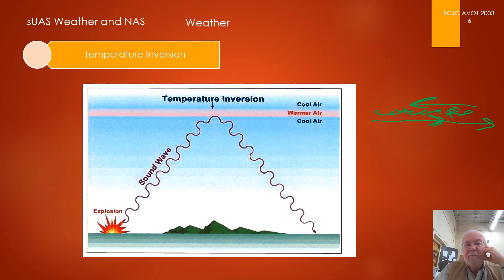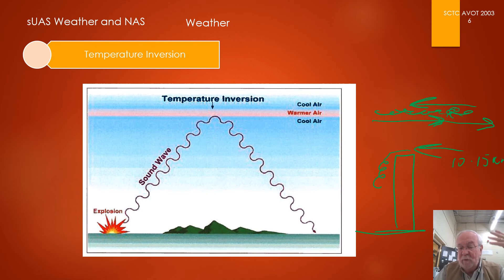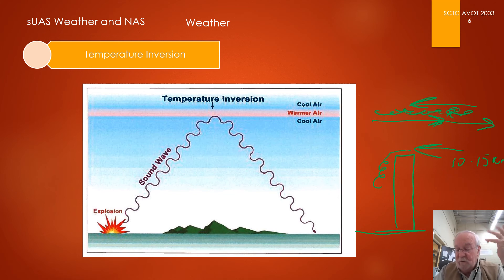We also get turbulence near buildings. Say we have a building and wind blowing at 10 to 15 knots — as the wind comes over the top of the building, you'll have turbulence on the leeward or downwind side. Flying a drone on the leeward side of a large building, construction, or even trees could cause turbulence, making it difficult to control the drone, get a stable video or photograph, and potentially causing a crash.